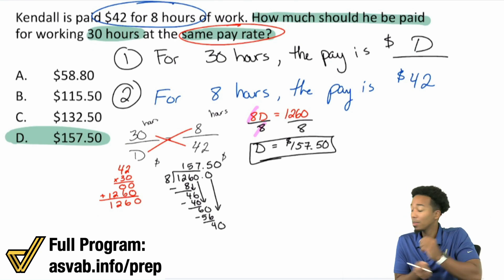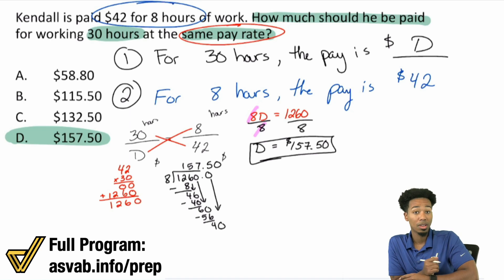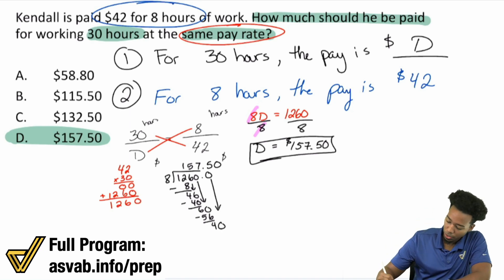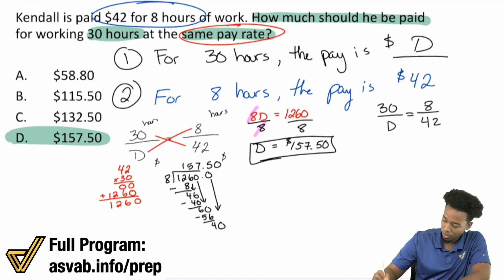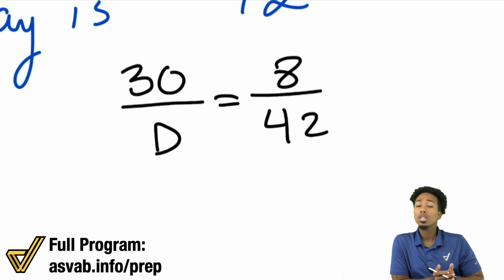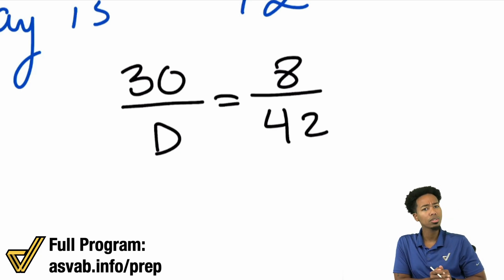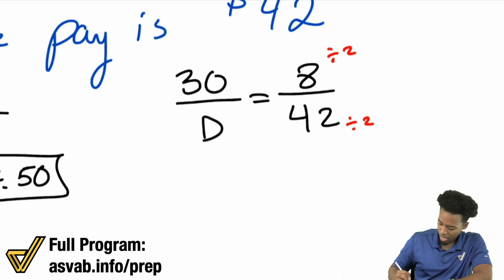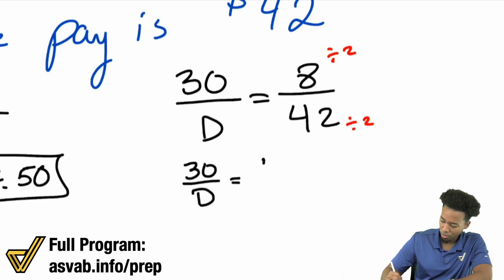Let me show you a much faster way, because look at all that work we just did. Let me rewrite the proportion: 30 over D equals eight over 42. One thing we know about fractions is that we can simplify them. When you look at eight and 42, they're both divisible by two. So we simplify a two out and end up with 30 over D equals four over 21.